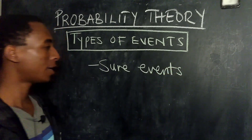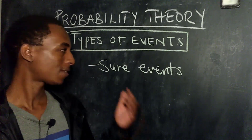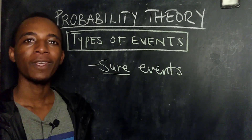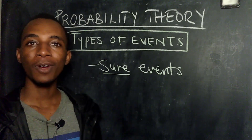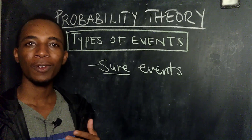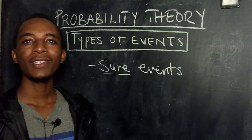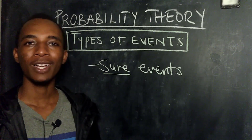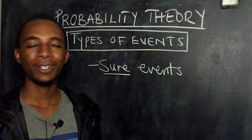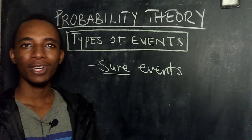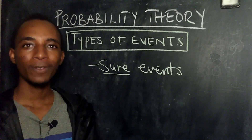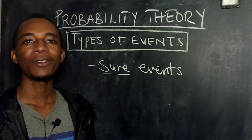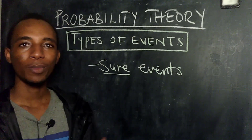So the first type of event is sure events. As the name suggests, sure means you're sure that this event is going to occur. Sure events are those with a probability of 1 — they are events whose probability equals 1 because they are always going to occur. For example, the probability that a day will have 24 hours: on average, a day will have 24 hours, so if you're given all the days in a year and asked to pick a day with 24 hours, all days have 24 hours, so your probability will be 1.